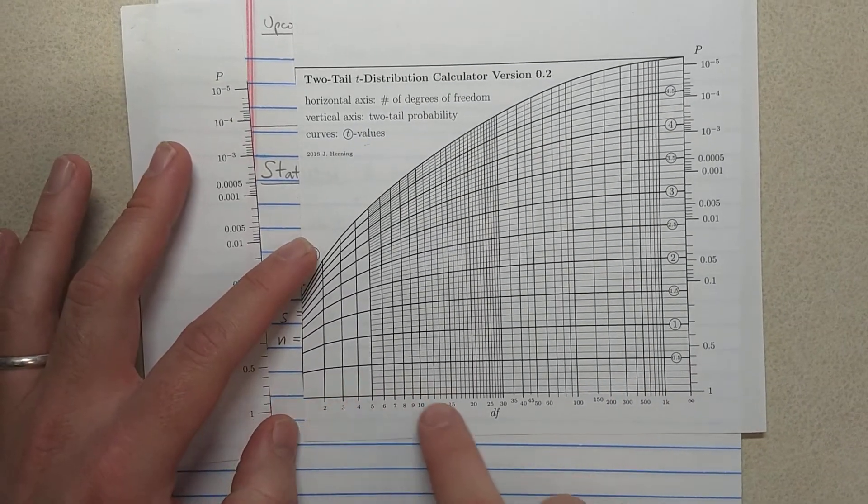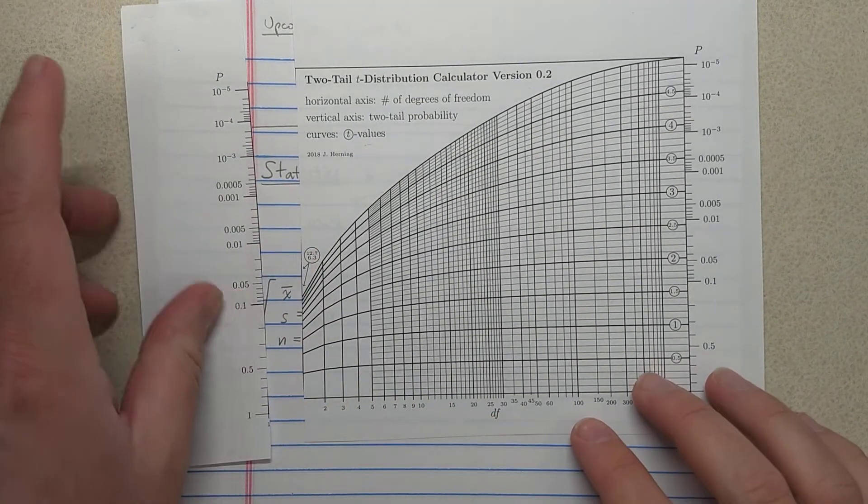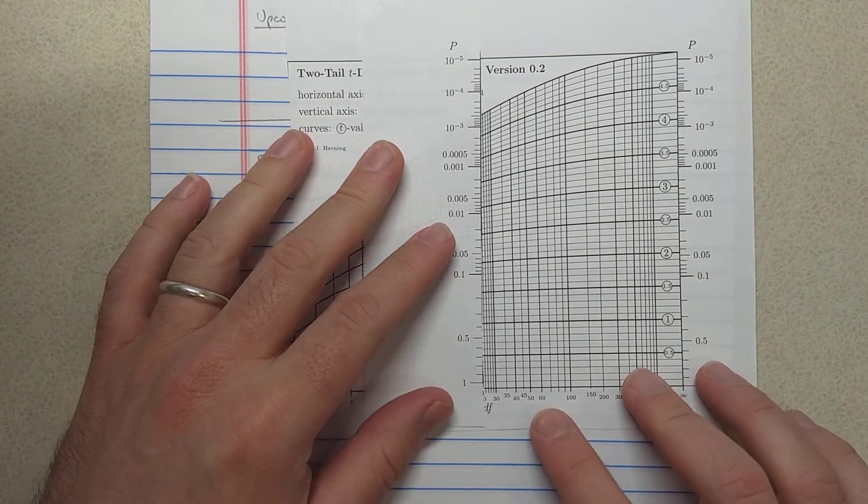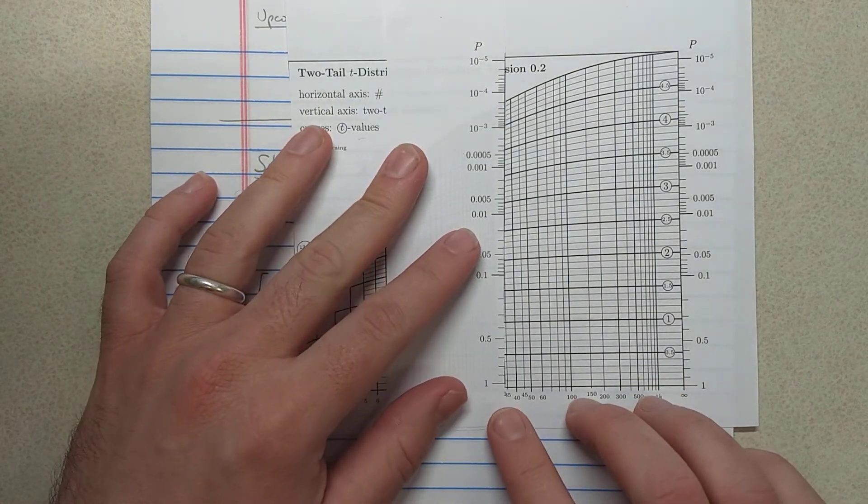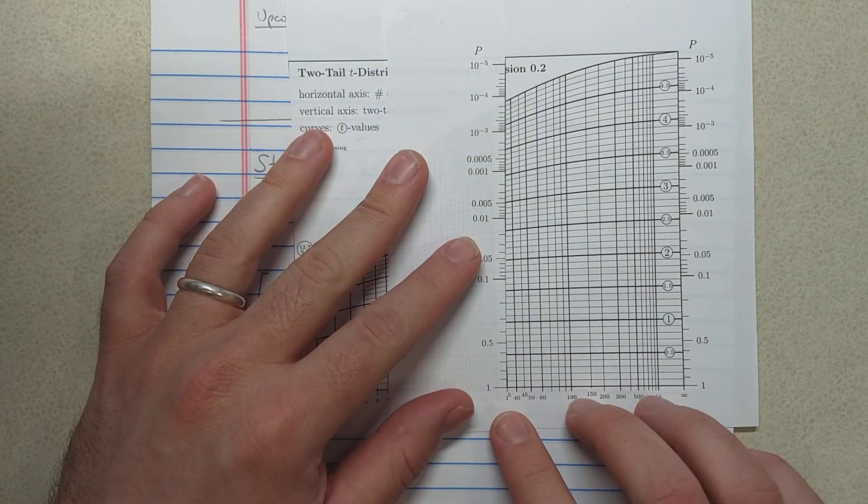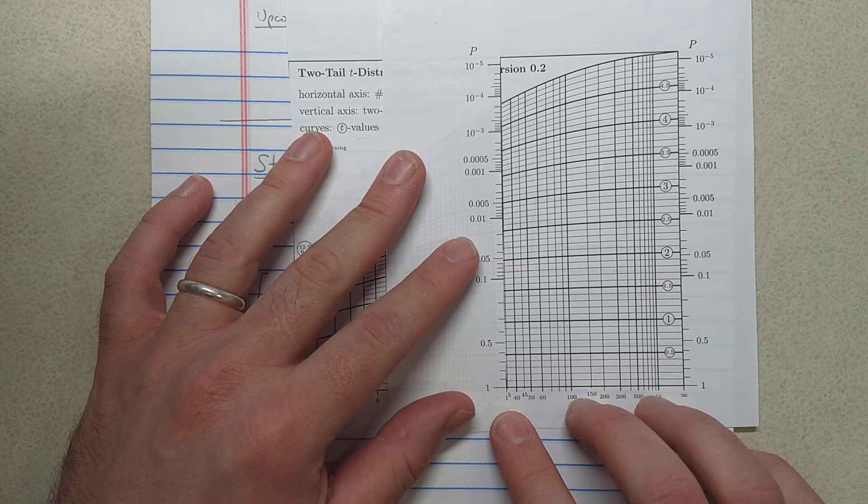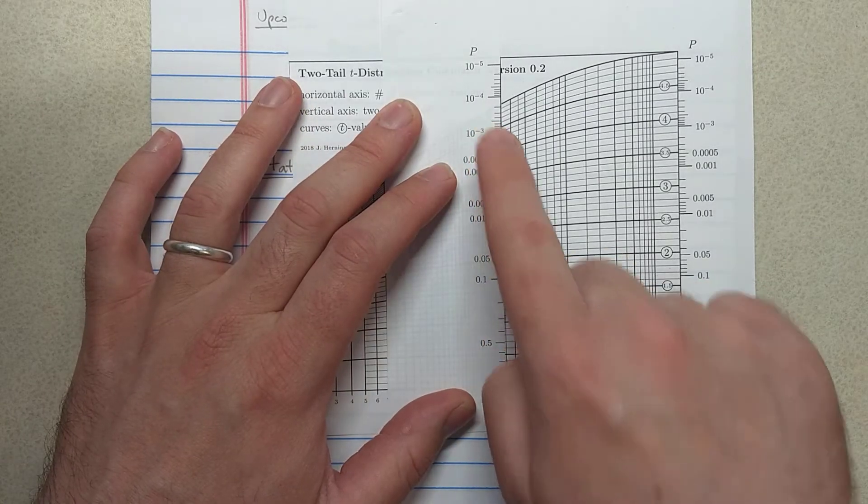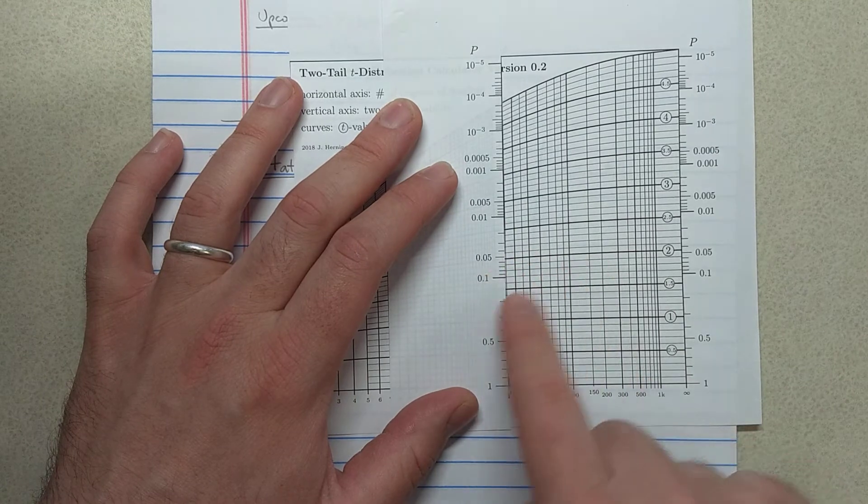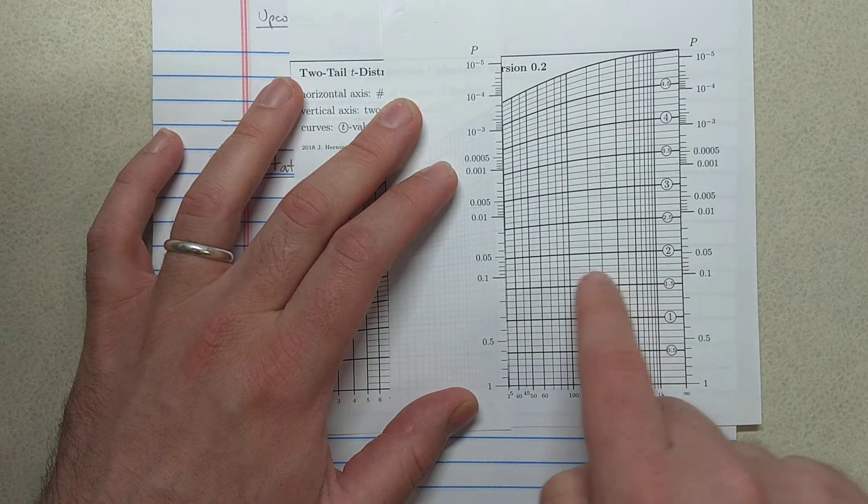And so what you have here are your degrees of freedom across the bottom. And the way you should use this is you find the degree of freedom, so you want degree of freedom 35, you use your cutout, you line that up.